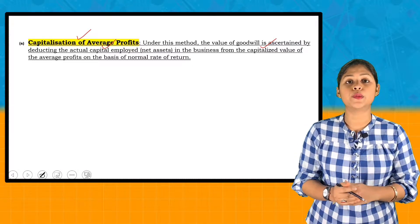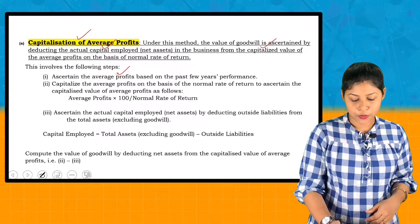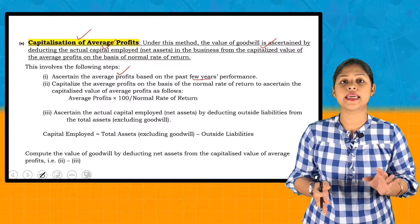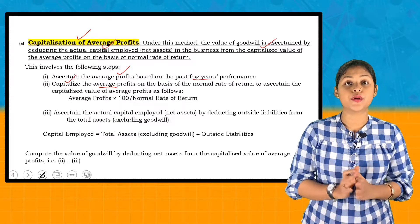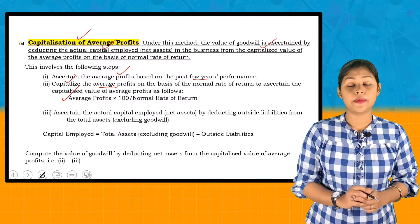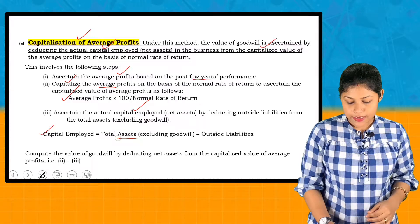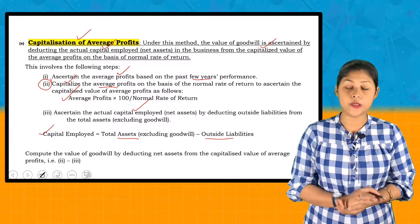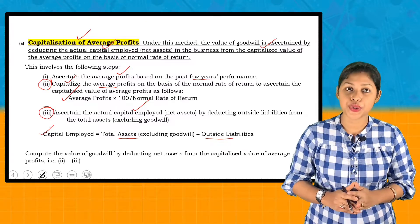The steps for Capitalization of Average Profits are: First, calculate the average profits based on the past few years. Second, calculate the capitalized value, which equals average profits multiplied by 100 divided by the normal rate of return. Third, calculate the actual capital employed, which is total assets minus outside liabilities. Goodwill equals the capitalized value of average profits minus the actual capital employed.